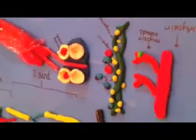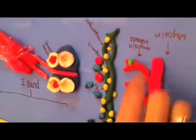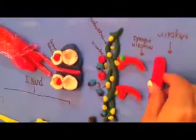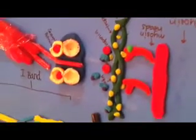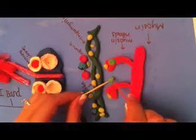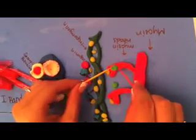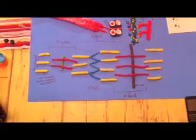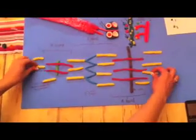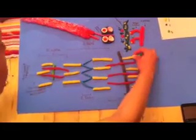The high-energy myosin heads leap to bind to the exposed active sites on the thin filaments, forming a crossbridge. The myosin head pivots to the low-energy state, releasing ADP, and moving the thin filaments over the thick filaments, which is the power stroke.